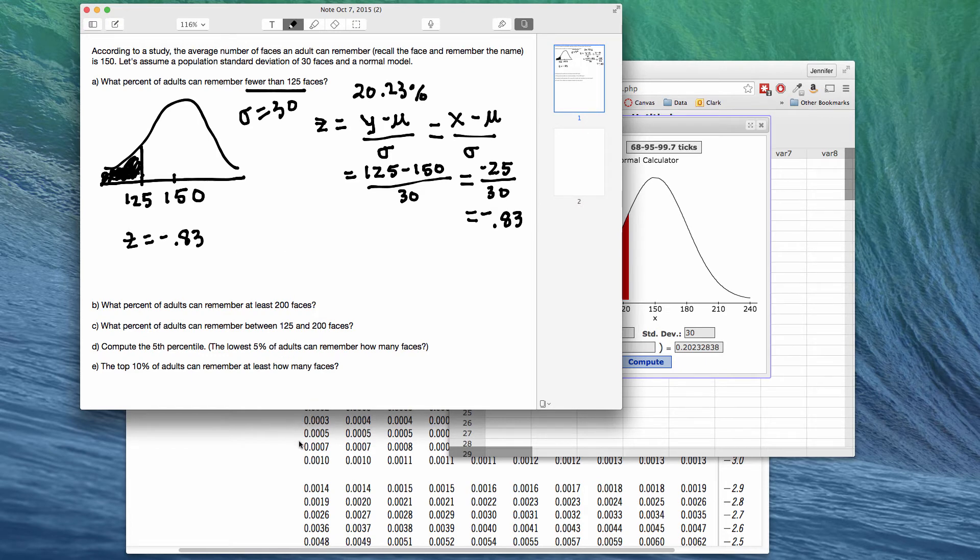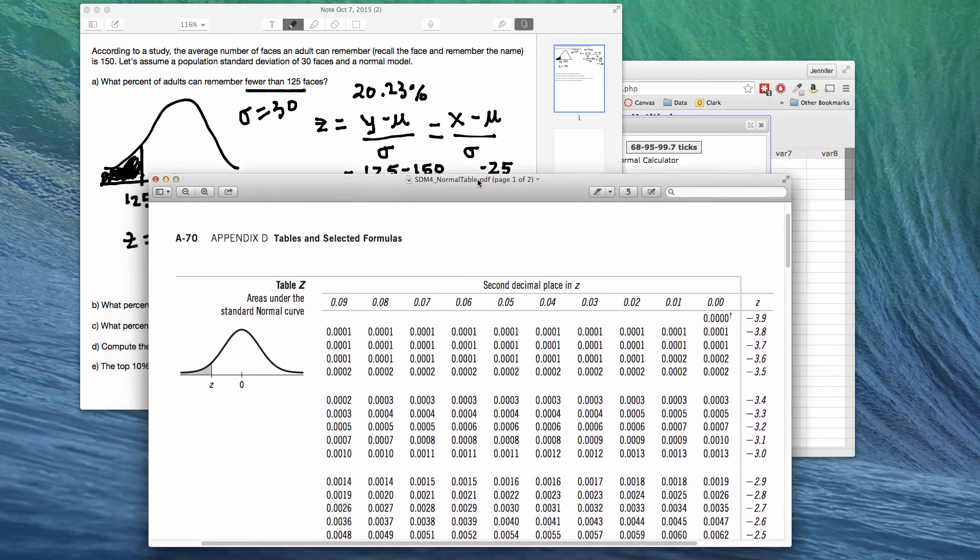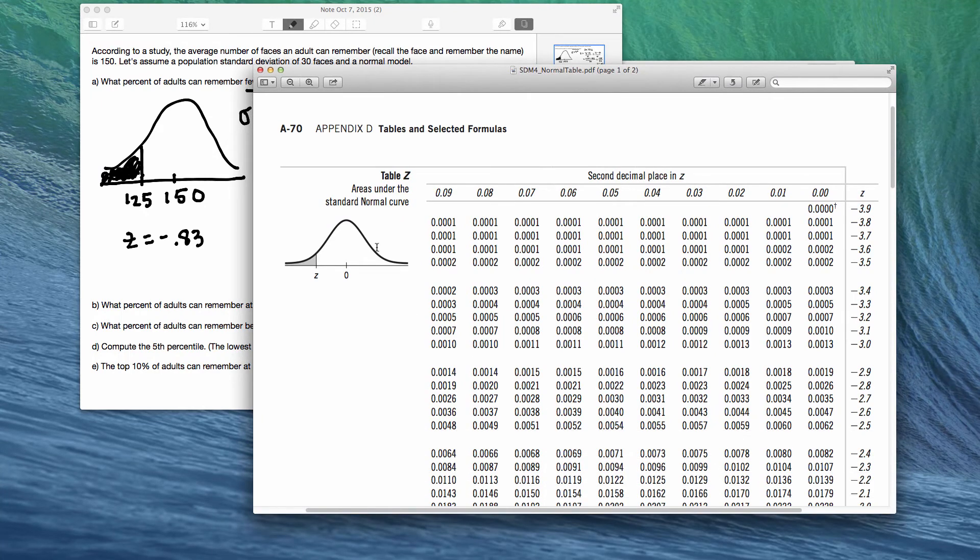So now we can go to our normal table. One more window. Here's our normal table, and it's going to give us probabilities based on certain z-scores, and it's always going to be area to the left, and that's because this little gray area is shaded. Area under the standard normal curve, and we're looking always to the left. So the way to look at this table is look down the side, look across the top, find where the row and the column overlap, and there's your probability in that intersection.